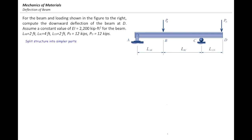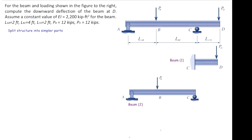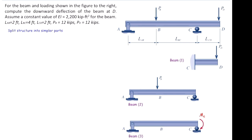The first step is splitting the structure into simpler parts. We first consider the cantilever beam and a simply supported beam. The simply supported beam, or beam number two, is subjected to external load P.